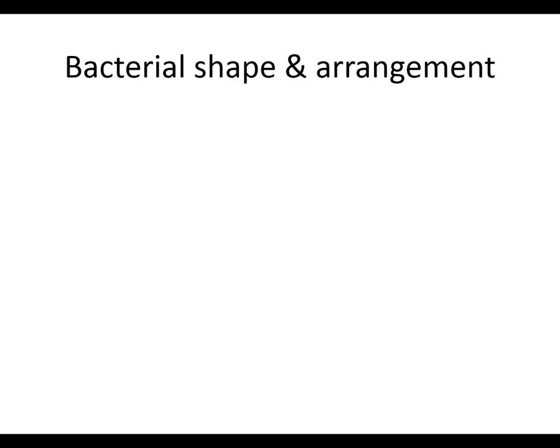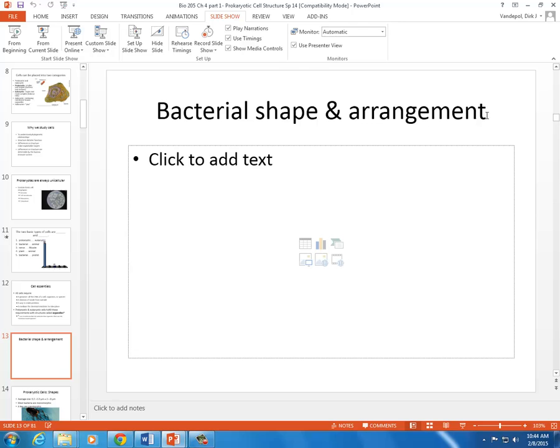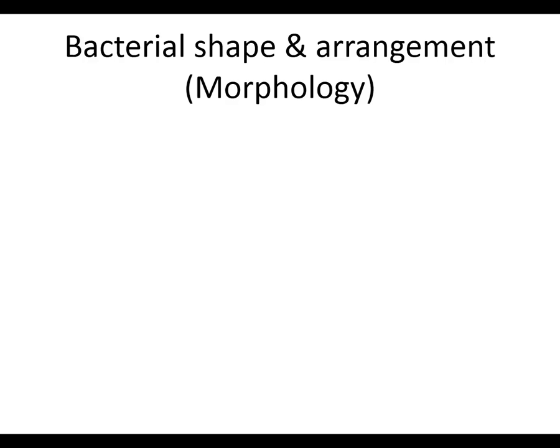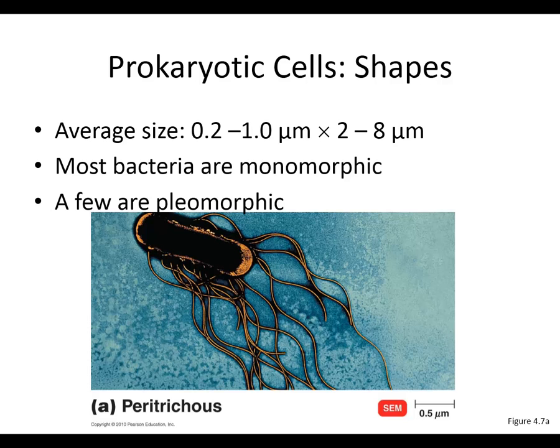Bacterial shape and arrangement — in other words, bacterial morphology — is the study of bacterial shape and arrangement. Prokaryotic cell shapes are generally small: about 0.2 to 1 micron wide and 2 to 8 microns long. The Greek letter mu is the prefix for micro. A micrometer is one thousandth of a millimeter, or one millionth of a meter.